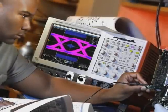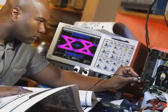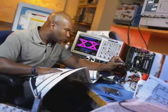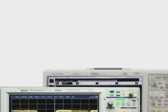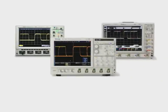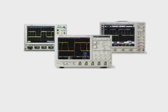Looking for runts and glitches in a digital signal is one of the most common debug tasks design engineers face today. In this video, we'll look at the abilities of three mid-range oscilloscopes to debug a series of digital signals from LaCroix, Agilent, and Tektronix. The objective is simple.